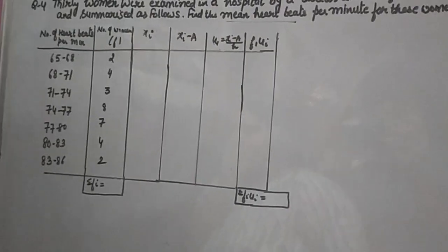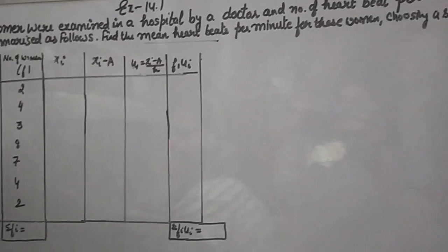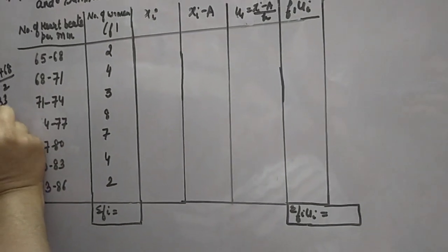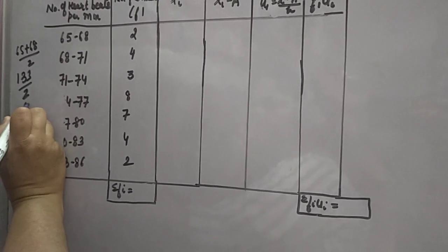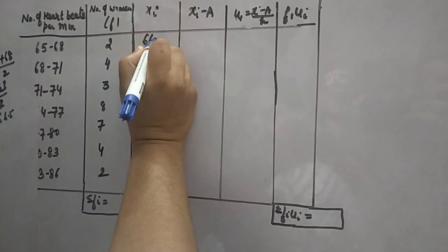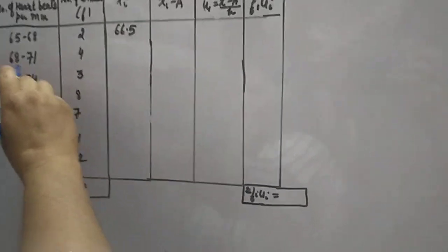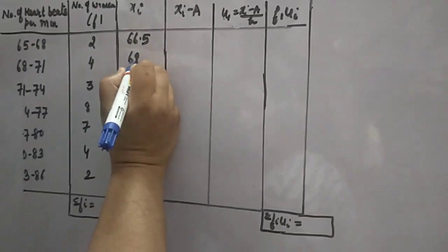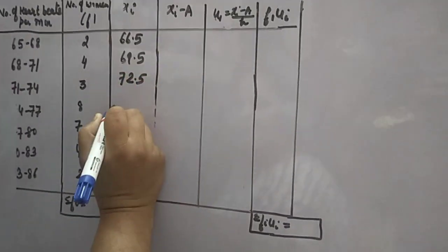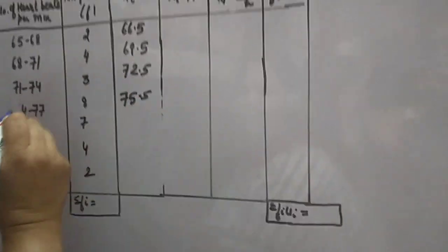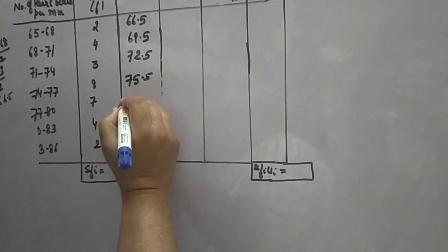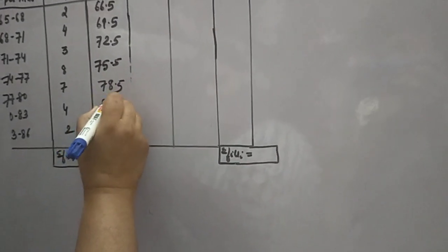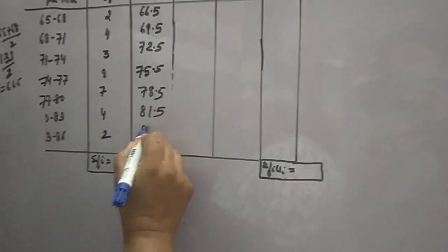To find mean, first we'll find xi. Lower limit plus upper limit over 2. So 65 plus 68 over 2 equals 133 over 2, which gives 66.5. Similarly, 68 plus 71 over 2 gives 69.5. Then we get 72.5, 75.5, 78.5, 81.5, and 84.5.